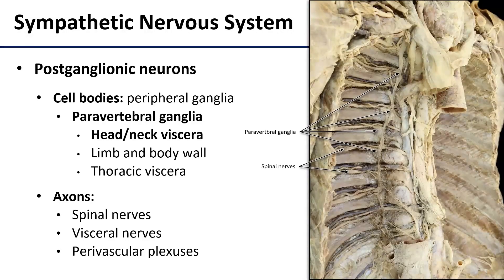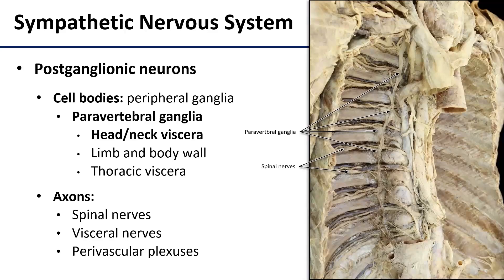There are three ways the postganglionic axon can do this depending upon where it needs to go. If the target is somewhere within a spinal nerve's territory — say a sweat gland in the neck — it can jump on a spinal nerve to ride there. Alternatively, it could ride a visceral nerve directly to a thoracic organ, or it could leave joining a spinal nerve altogether and ride on the surface of a blood vessel to get where it's going. This last example, when you have nerves following an artery, is called a perivascular plexus. This is how almost all sympathetics travel around the head — spinal nerves don't enter up into the head, they stay in the neck, so for these sympathetics to get up into the head they jump on top of blood vessels and travel with them.